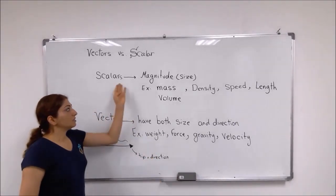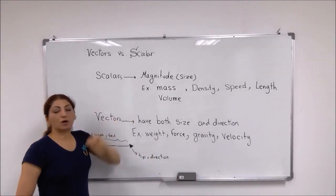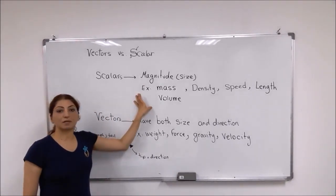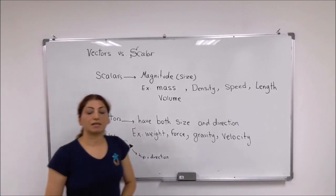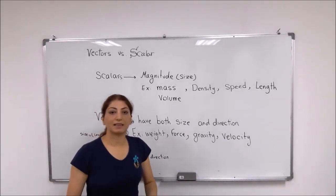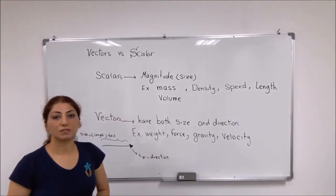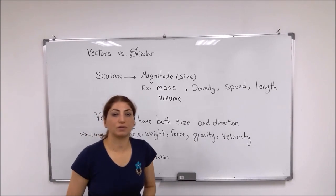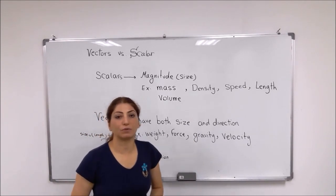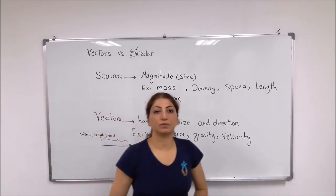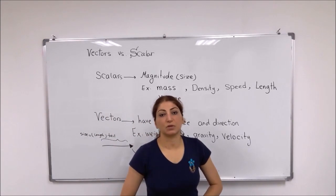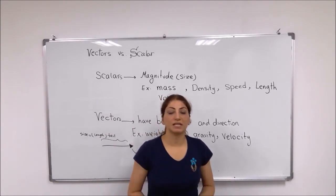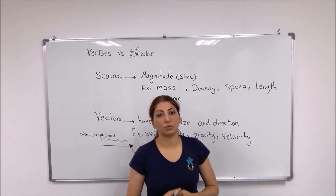For scalar quantities, they have magnitude or size. Examples include mass, density, speed, and length, or volume. It's not important whether it is towards north, east, south, downward, upward, or to the left or right. These directions are not important for us. What is important is just the size of those properties of the matter that we have measured.